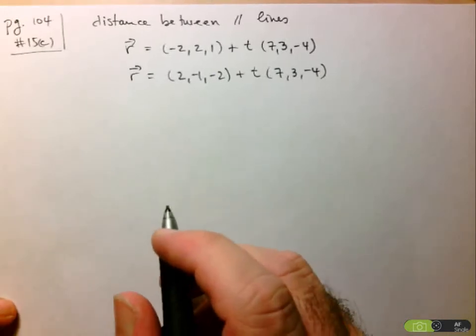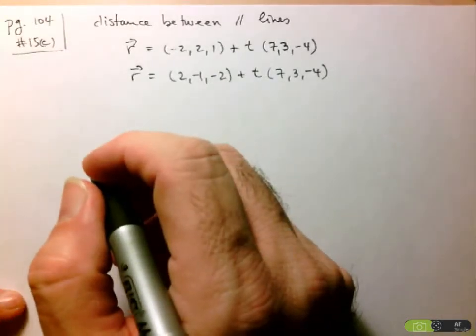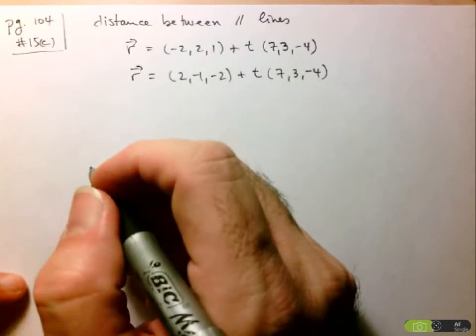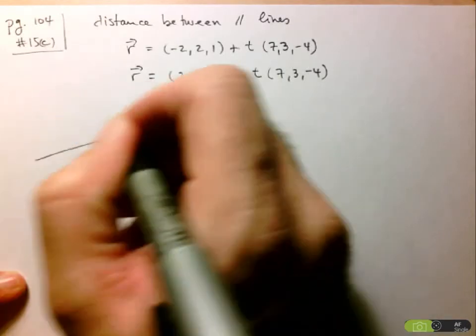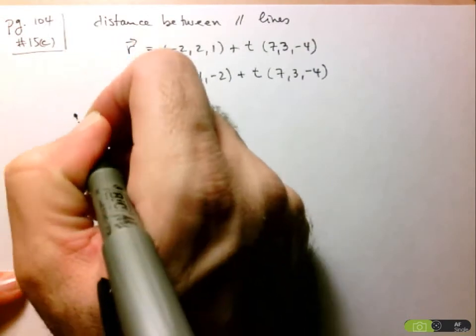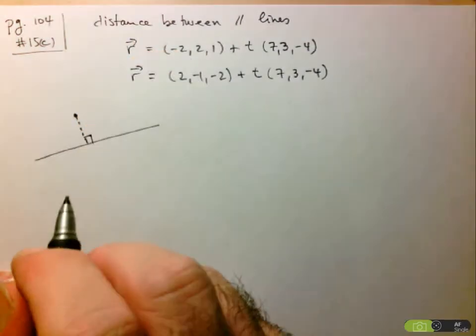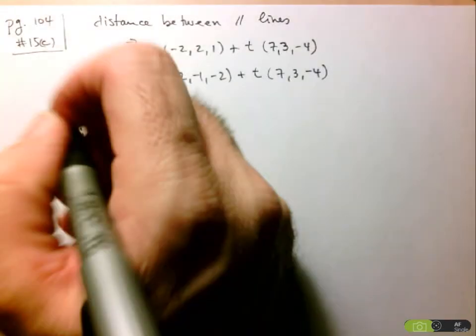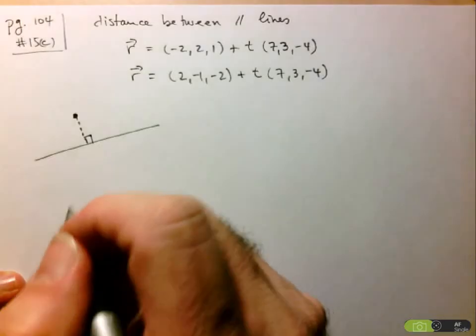Now, what we have is a formula for finding the distance between a point and a line in 3D. So if I have a line and I have a point, I have a formula to find this distance. In other words, the shortest distance from the point to line.